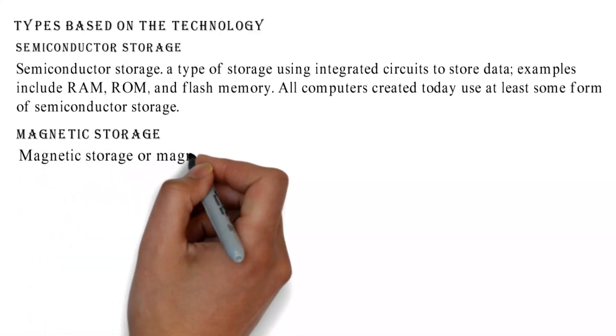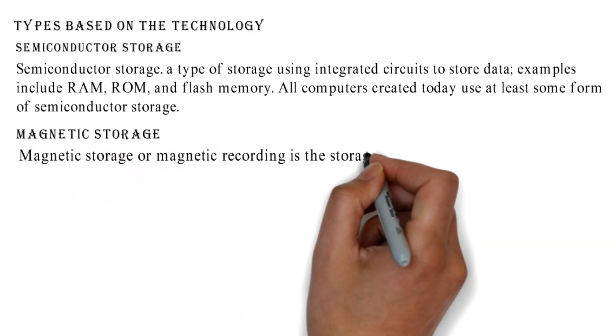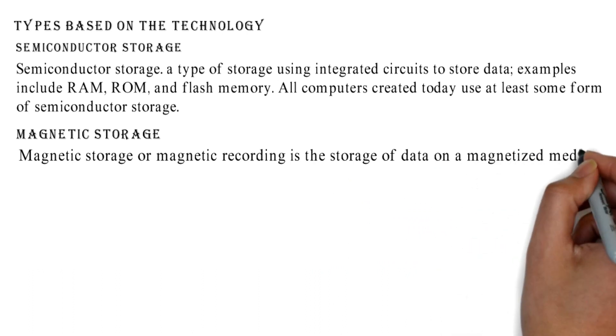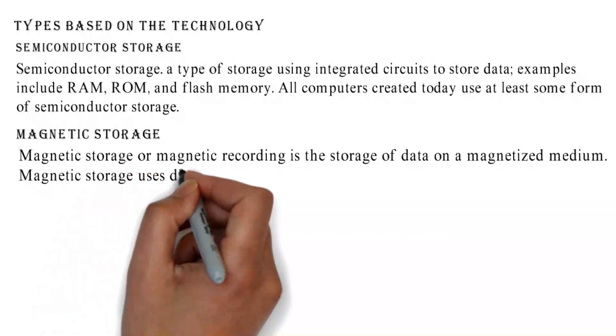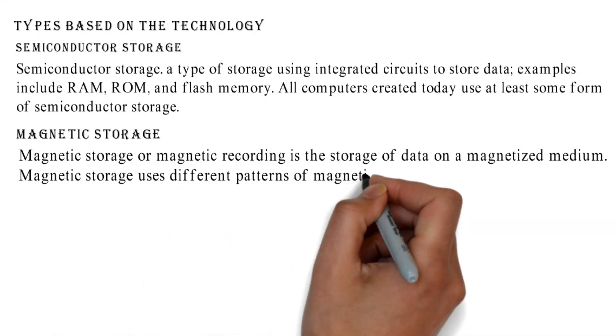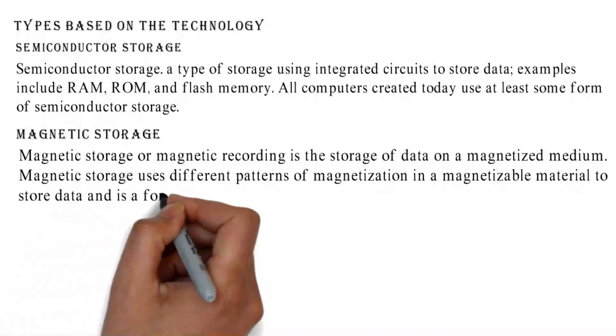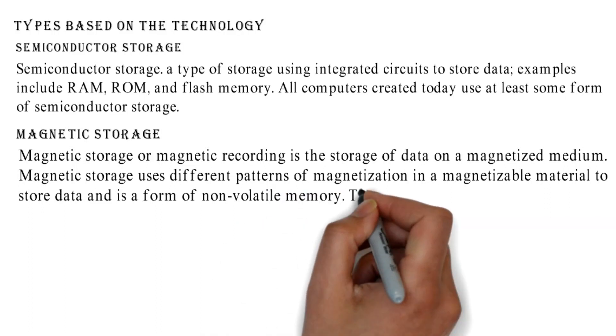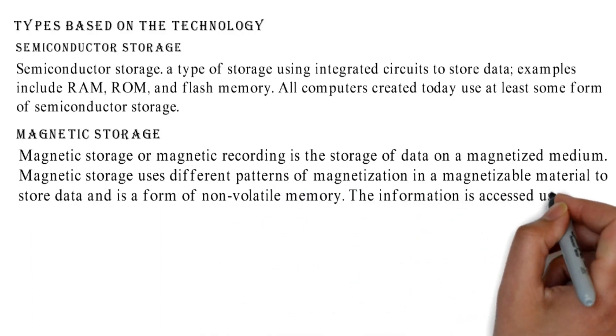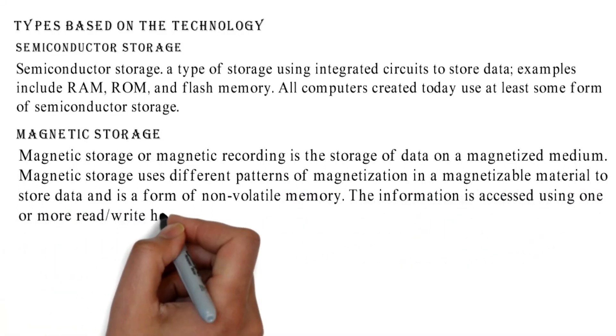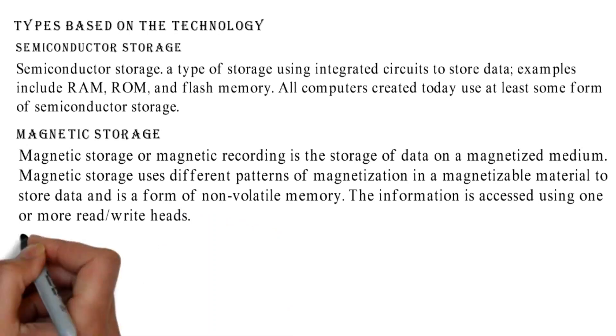Magnetic storage or magnetic recording is the storage of data on a magnetized medium. Magnetic storage uses different patterns of magnetization in a magnetizable material to store data and is a form of non-volatile memory. The information is accessed using one or more read/write heads.